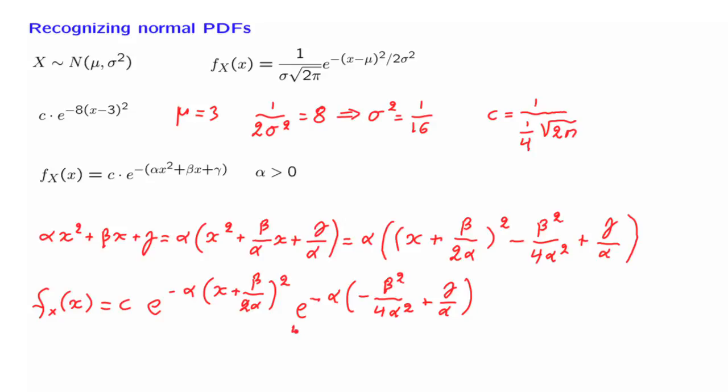Now, this term here does not involve any x's. So it can be absorbed into the constant c. The dependence on x is only through this term. And now this term looks exactly like what we've got up here, provided that you make the following identifications.